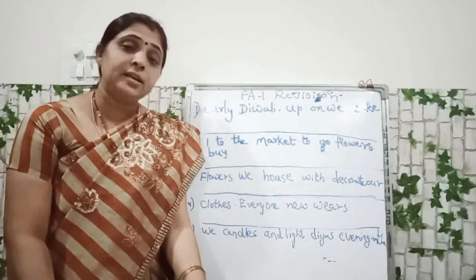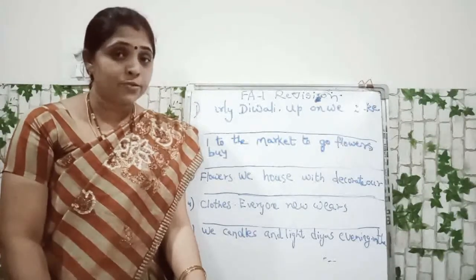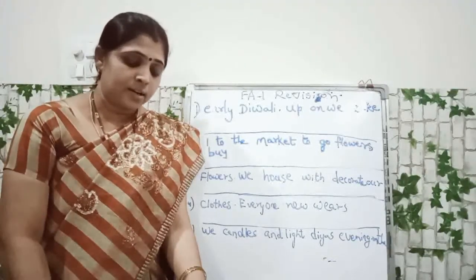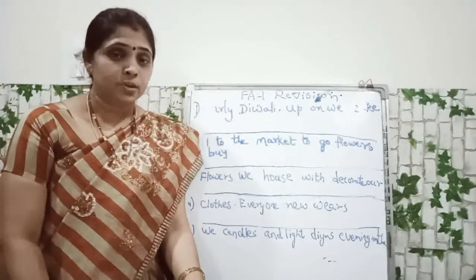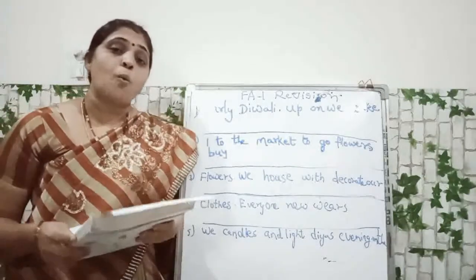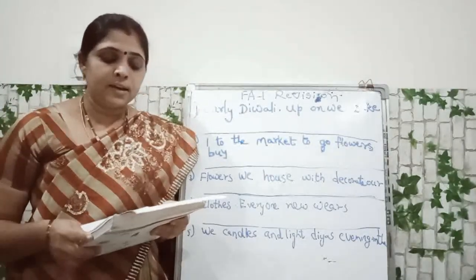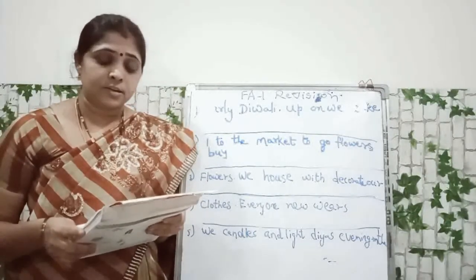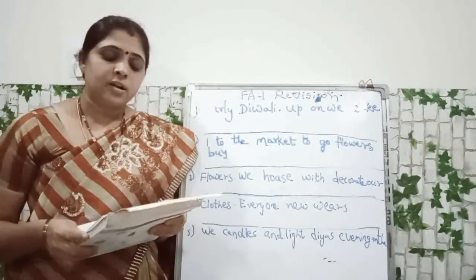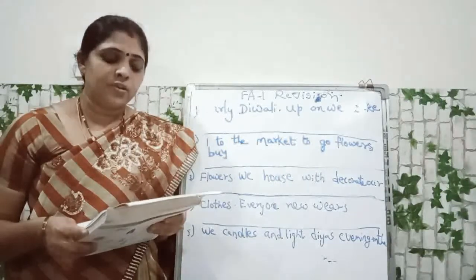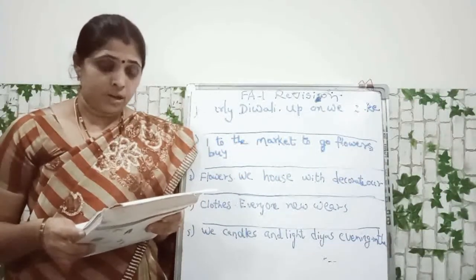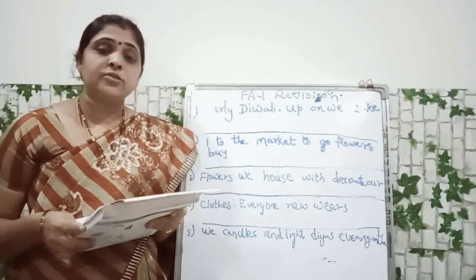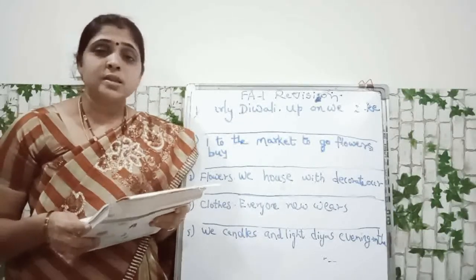Read the passage and complete the table. First you have to read the passage and then the table given below, that one you have to complete. Once there lived a little girl named Luka. She asked her father Dan if she could visit her grandfather. Her father said yes, you can. Be careful and take your sister with you. Okay, this is the passage given there.